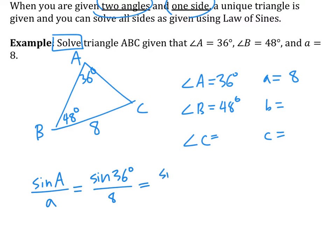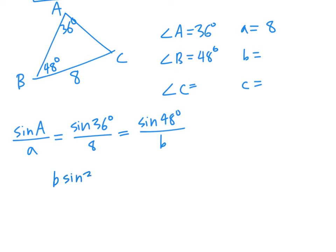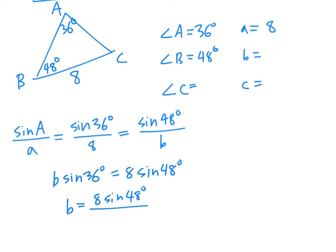We'll solve for B next. So sine of 48 degrees over b equals sine of 36 degrees over 8. Solve for b by cross-multiplying: b times sine 36 degrees equals 8 times sine 48 degrees. Please make sure your calculator is in degrees and not radians — that's the only tricky part, since in this chapter you're switching between radians and degrees a lot.